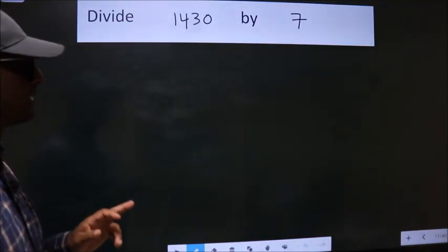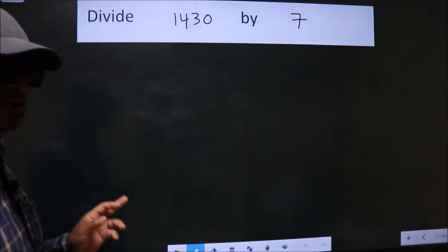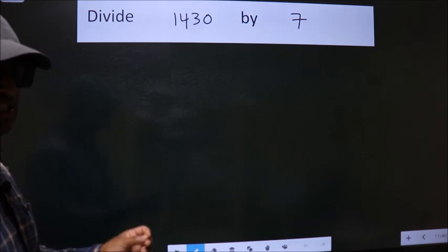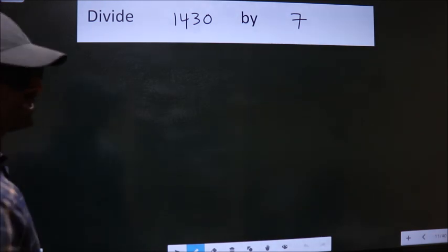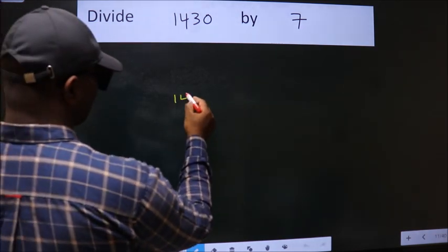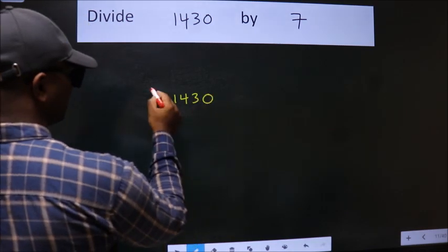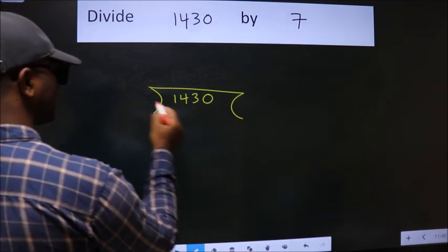Divide 1430 by 7. To do this division, we should frame it in this way. 1430 here, 7 here.